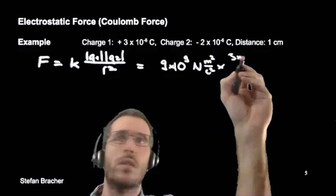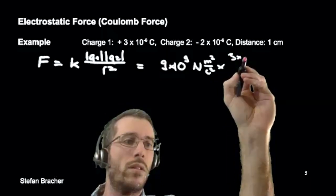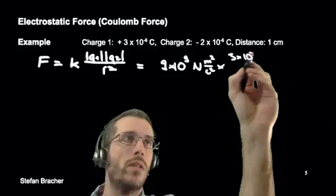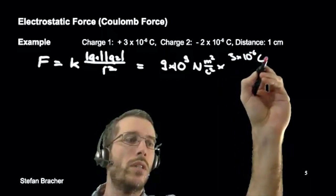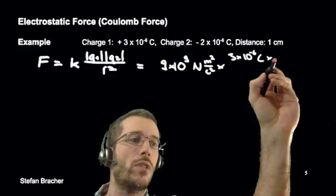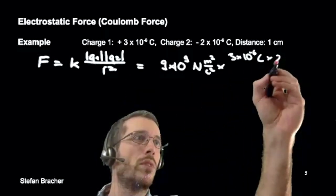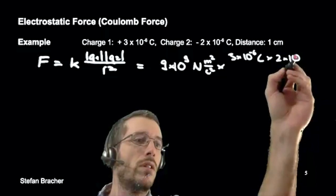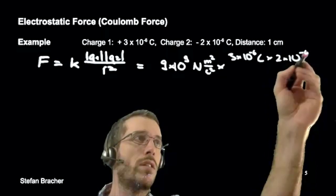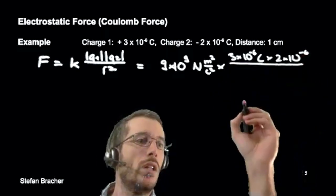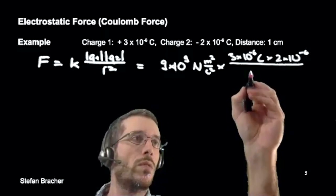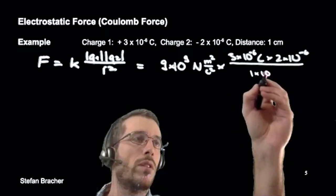Times my second charge which is 2 but we have the magnitude so minus 2 becomes 2 times 10 to the minus 6 over a centimeter is 1 times 10 to the minus 2 squared square meter.